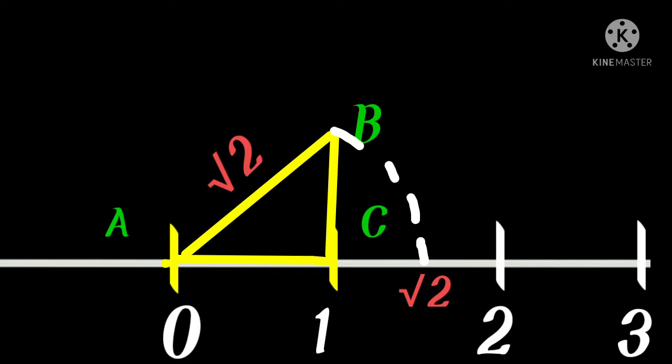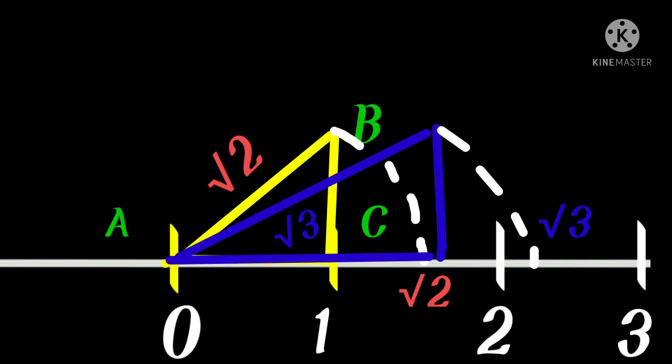Now what if you want to plot √3 on the number line? Looking at the triangle again: 1 + 1 gave us 2, which is why we got √2. For 3, we need 2 + 1 = 3, and 2 is nothing but (√2)². So if we take the base of the new triangle as √2 and the height as 1 unit, the hypotenuse will be √3, because (√2)² + 1² = 2 + 1 = 3.